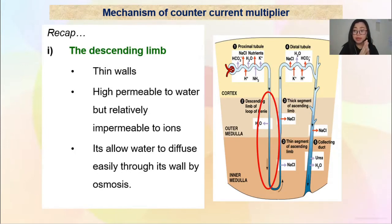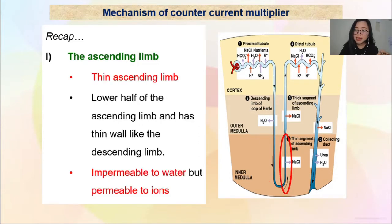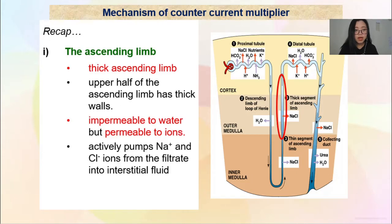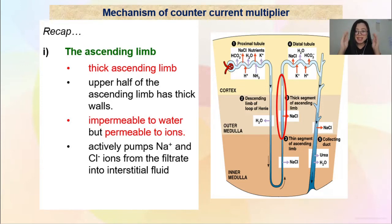Quick recap of the structure of the loop of Henle. The descending limb has thin walls and is highly permeable to water but only relatively impermeable to ions — it allows water to diffuse easily through its walls via osmosis. The ascending limb has a thin portion and a thick portion. The thin ascending limb — the lower half — has thin walls, is impermeable to water but permeable to ions. The thick ascending limb — the upper portion — is also impermeable to water and permeable to ions, but only the thick ascending limb will actively pump Na+ and Cl− from the filtrate into interstitial fluid. Di bawah adalah passive diffusion; di atas adalah active transport untuk keluarkan NaCl.